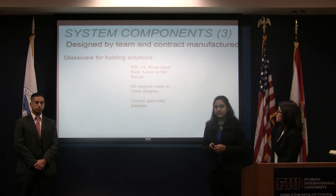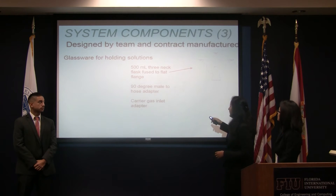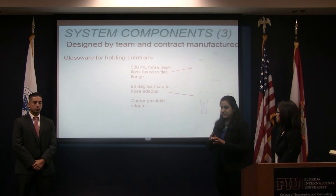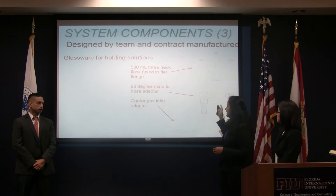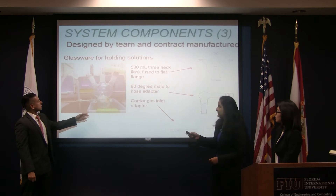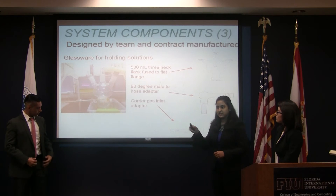The next is the glassware we needed to hold the solution. The first piece is a 500-milliliter three-necked flask fused to a flat flange, which will hold the precursor solution. The second is the 90-degree mill to hose adapter, which will connect to the middle neck of the flask and then be connected to the tubing on the hose side. The third piece is the carrier gas inlet, which will go into one of the side necks of the flask for the carrier gas connection. The picture on your left shows the complete setup of the flask: the carrier gas inlet, the middle neck with tubing connected to it, and the right neck to pour in the solution.